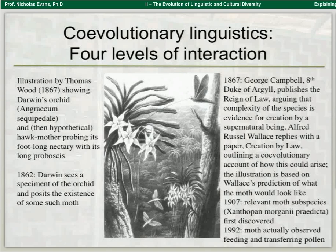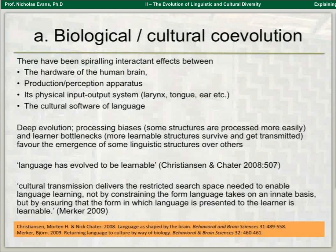Turning to the types of co-evolution we have: if we look at biology and culture, we know that we have the hardware of the human brain, which has been pushed to grow by the needs of what it has to do. Think about the hardware and software of computers — processors, screens, Bluetooth, and the software which underlies them. That's a fairly good metaphor for what's happened between the brain, the mouth, the tongue, and the cultural software of speech over the last two hundred thousand years or more.